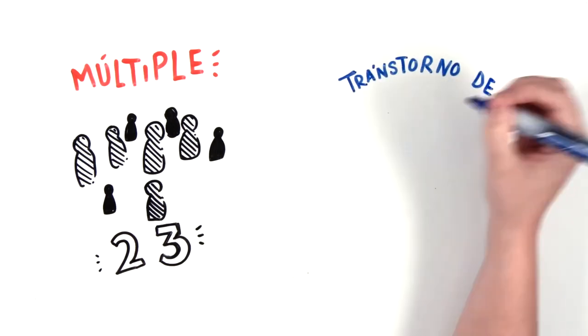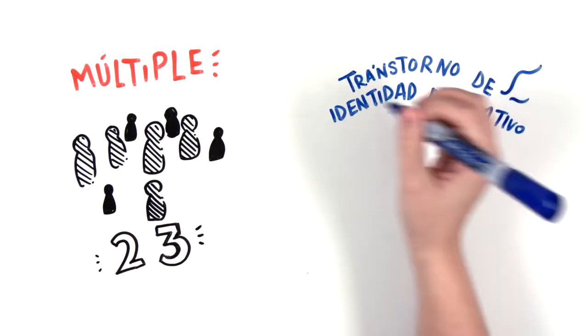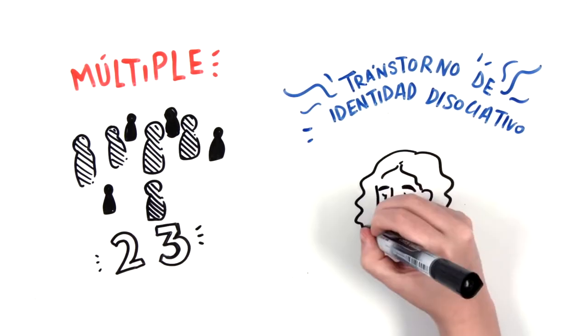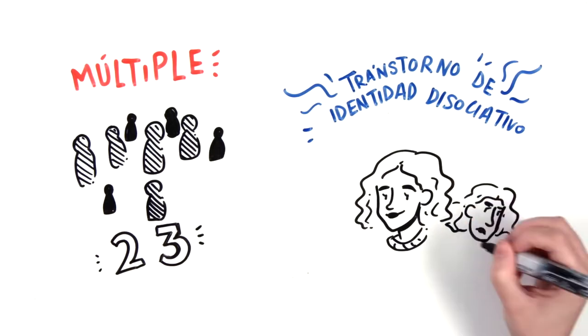Multiple Personality Disorder, or as it is known to experts, Dissociative Identity Disorder, is characterized by the presence of several distinct personalities in one person.